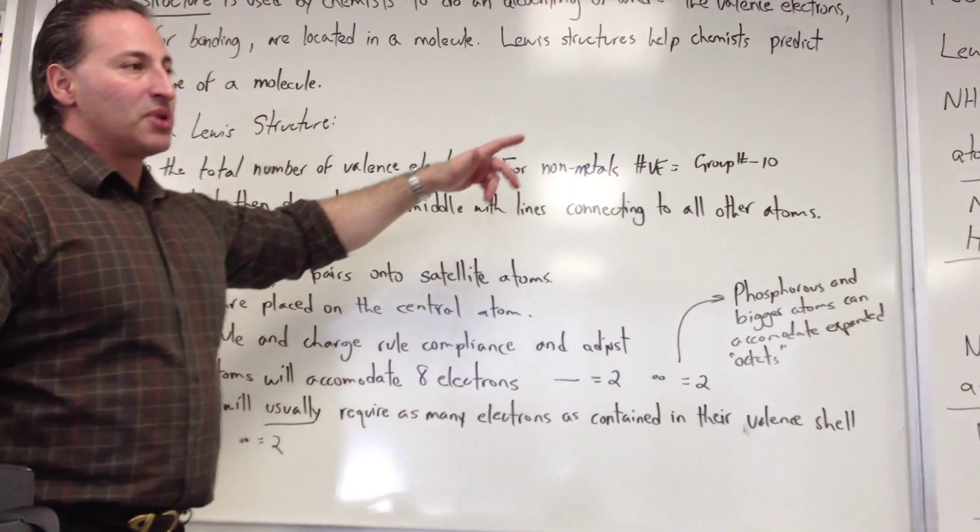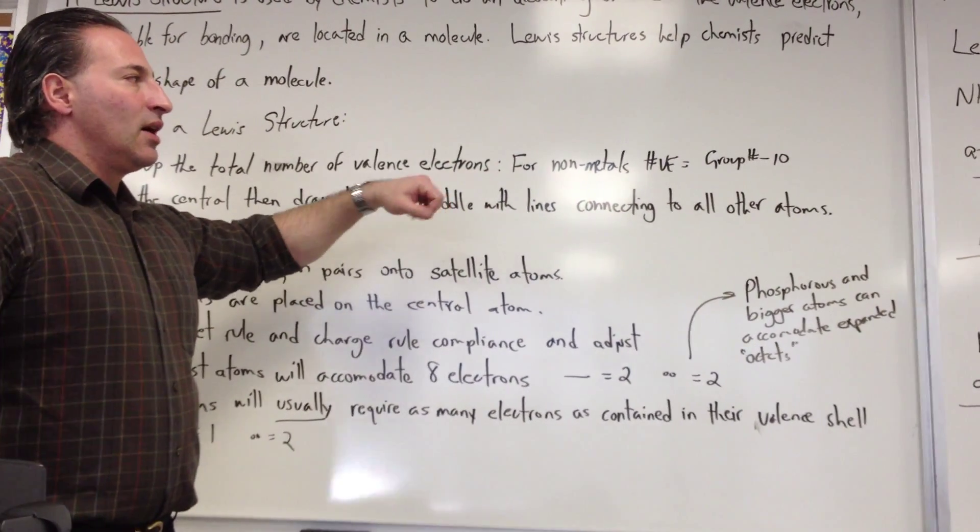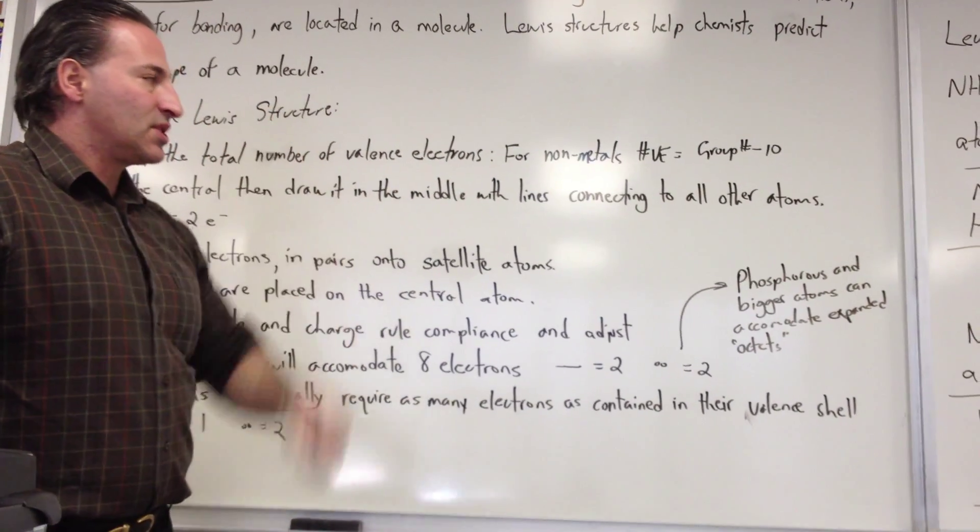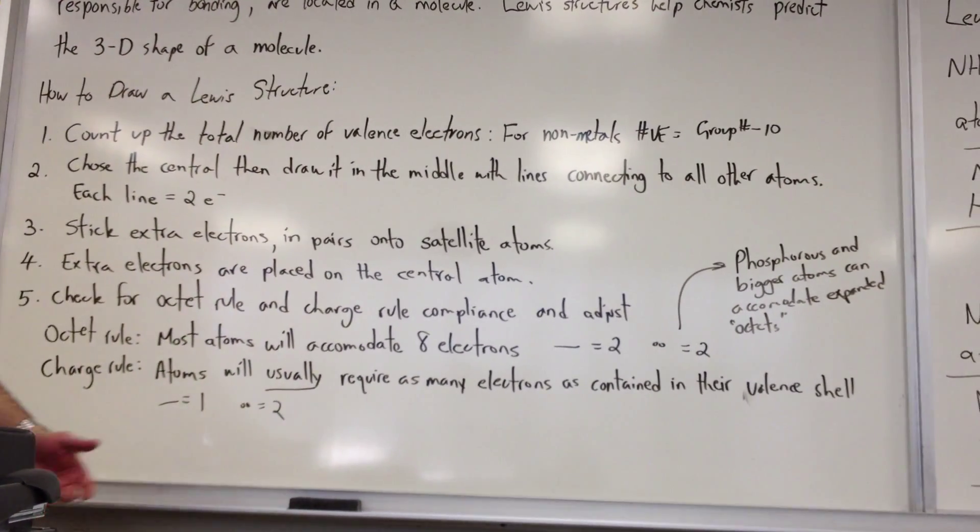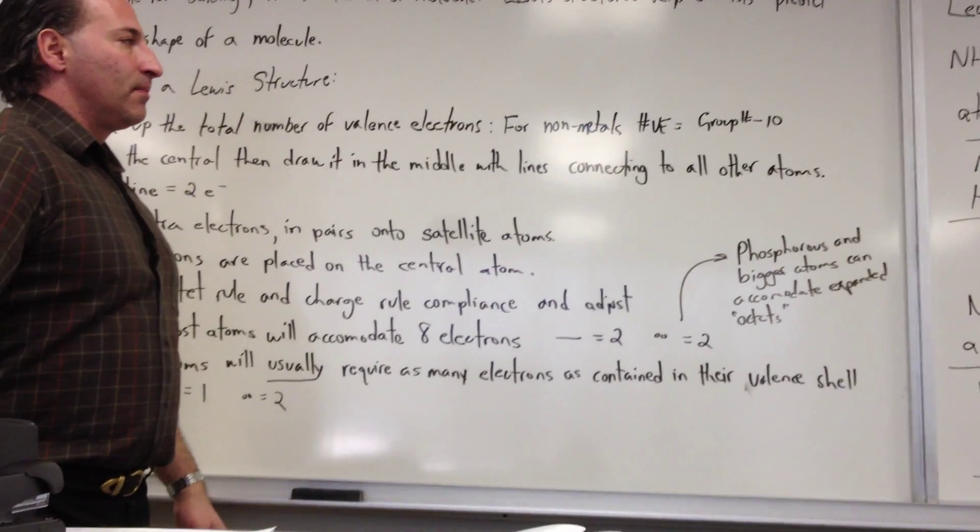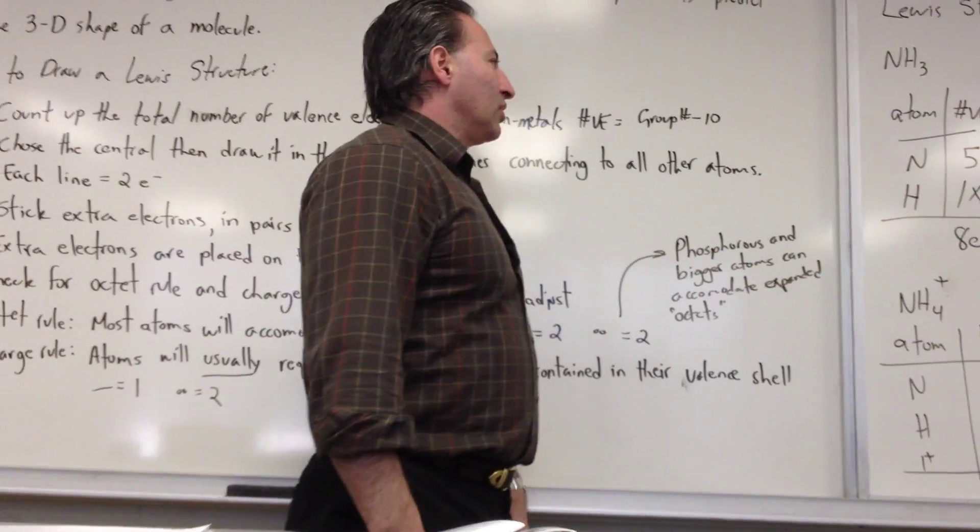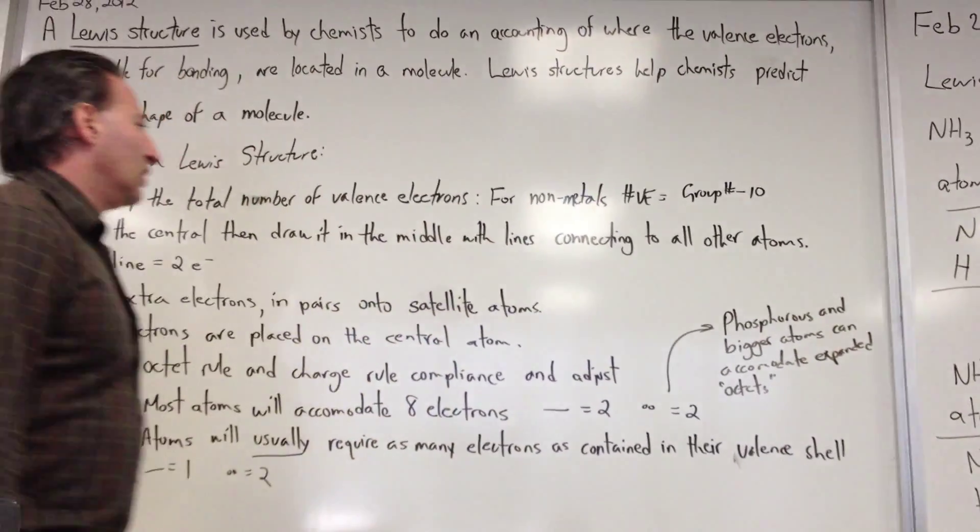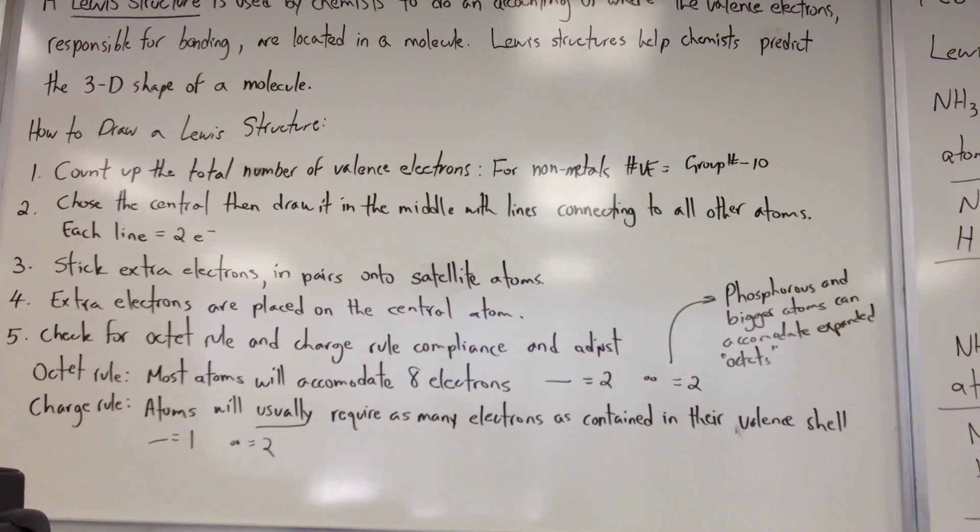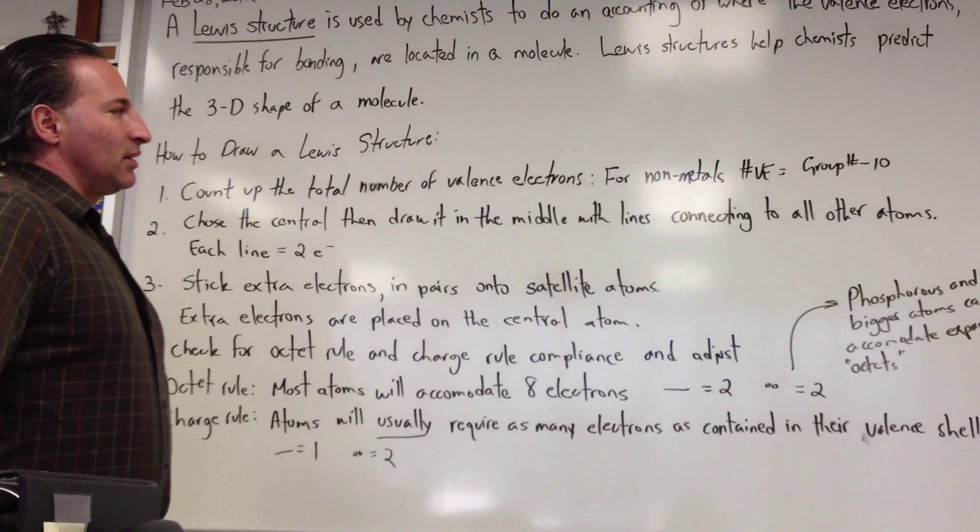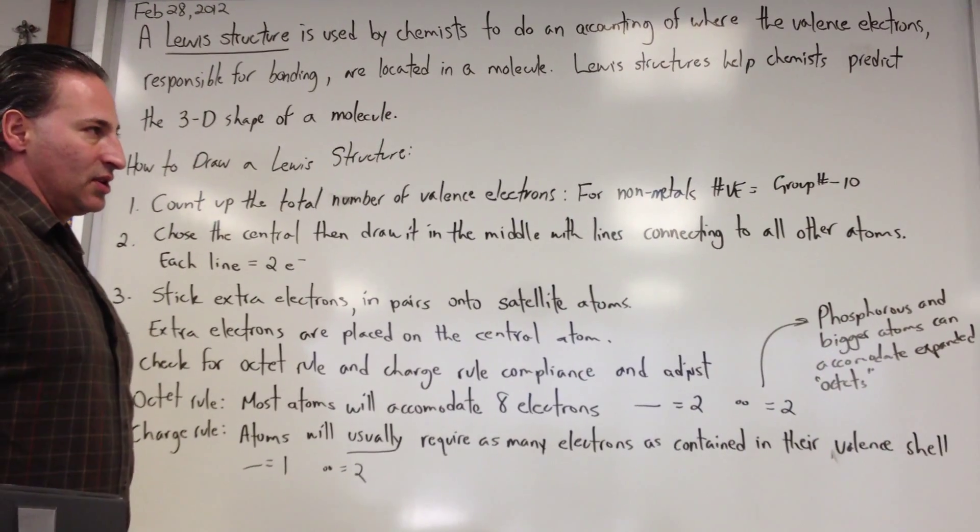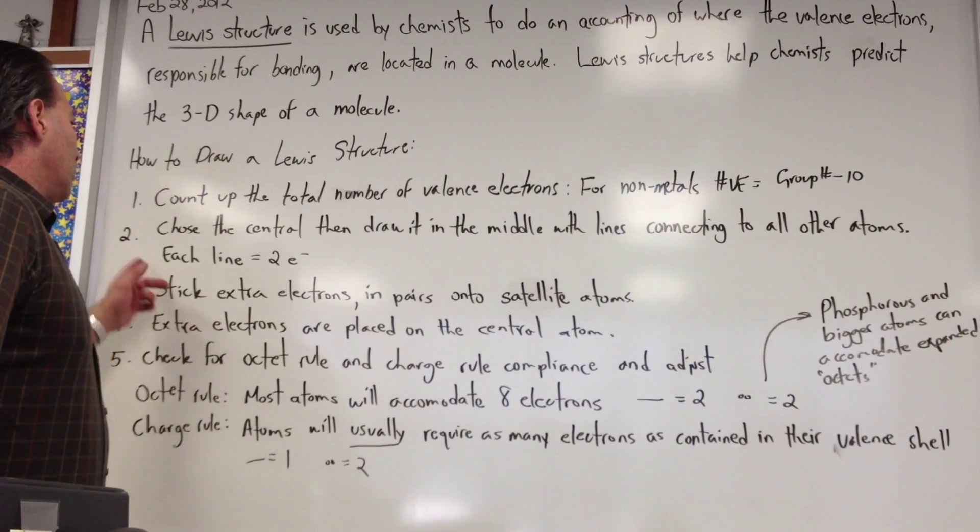For example, fluorine is a group 17 element. 17 minus 10 gives you 7 valence electrons. So each halogen within a molecule would count for 7 electrons. For metals, the number of valence electrons is equal to the group that the metal is in.